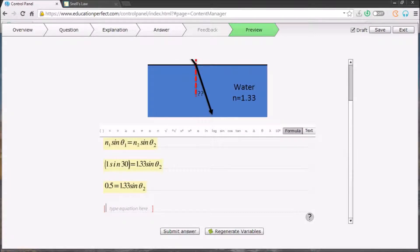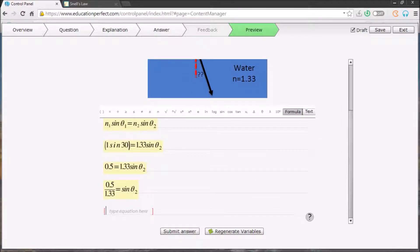Now divide both sides by 1.33 to undo the multiplication on the right side, just like that. Now we just need to get rid of that sine to isolate the unknown angle. This is done by using the inverse sine function, which looks like this on your calculator. Press the shift and sine buttons to use this function.